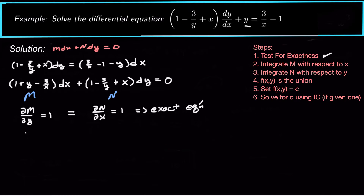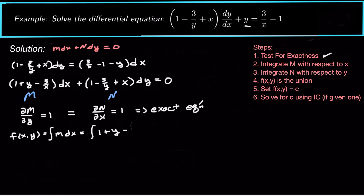To get the implicit solution f(x, y), we have to integrate m with respect to x. So f(x, y) equals the integral of 1 plus y minus 3 over x dx. Integrating with respect to x, we get x plus xy minus 3 natural log of absolute value of x, plus maybe something that only depends on y, so we call it g(y).